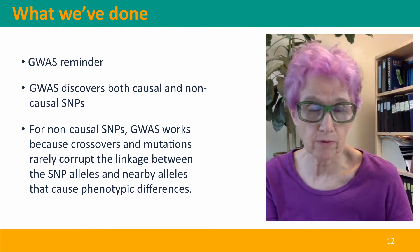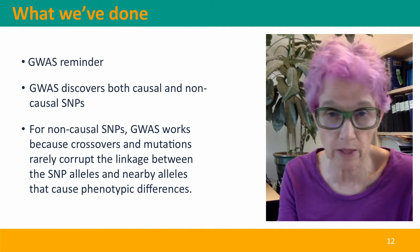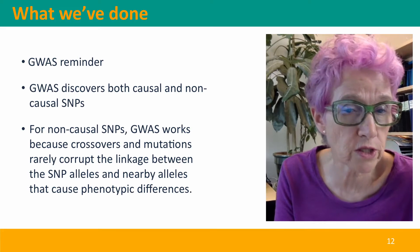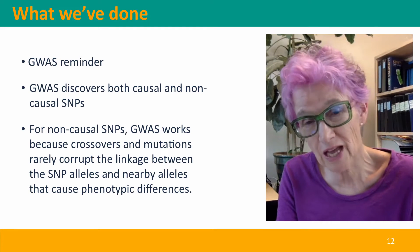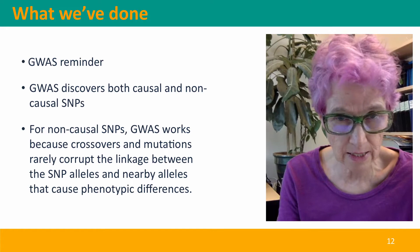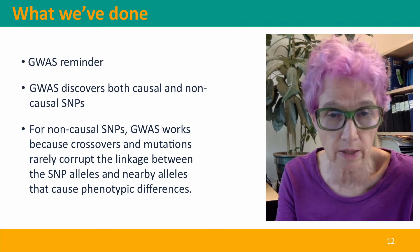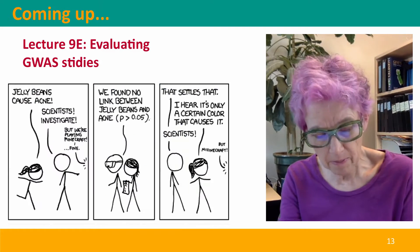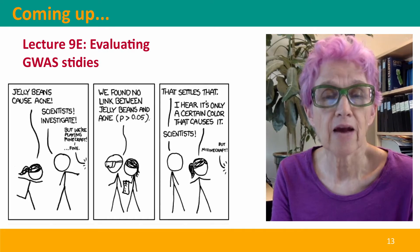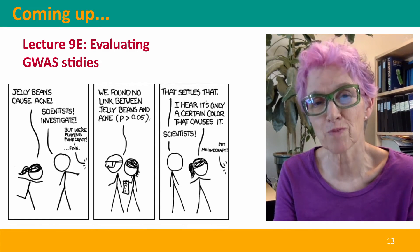So, what we've done: we've had a reminder of genome-wide association studies, we've clarified the distinction between causal SNPs and non-causal SNPs, and we've addressed the issue of how GWAS works for non-causal SNPs. It's because crossovers and mutation are both extremely rare along the short distances that GWAS is detecting, when it detects an association between a non-causal SNP and a causal allele in the genome. Coming up next, we're going to talk about how to evaluate genome-wide association studies — how do you decide that a particular association is really significant? I hope to see you there.